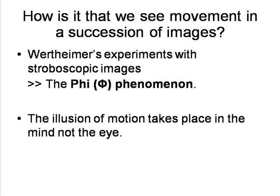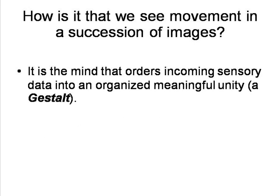Although the physiology involved in the simple Phi Phenomenon is now known to be more complex than this, Wertheimer's basic idea that the illusion of motion takes place in the mind rather than in primary sensation is accepted. Wertheimer hypothesized that the Phi Phenomenon was merely an expression of a wider truth: that it was the mind which ordered incoming sensory data into an organized meaningful unity — a gestalt, a German term for form, shape, or configuration. Subjects perceived an image as a whole rather than isolated elements which were then linked together by a process of association.